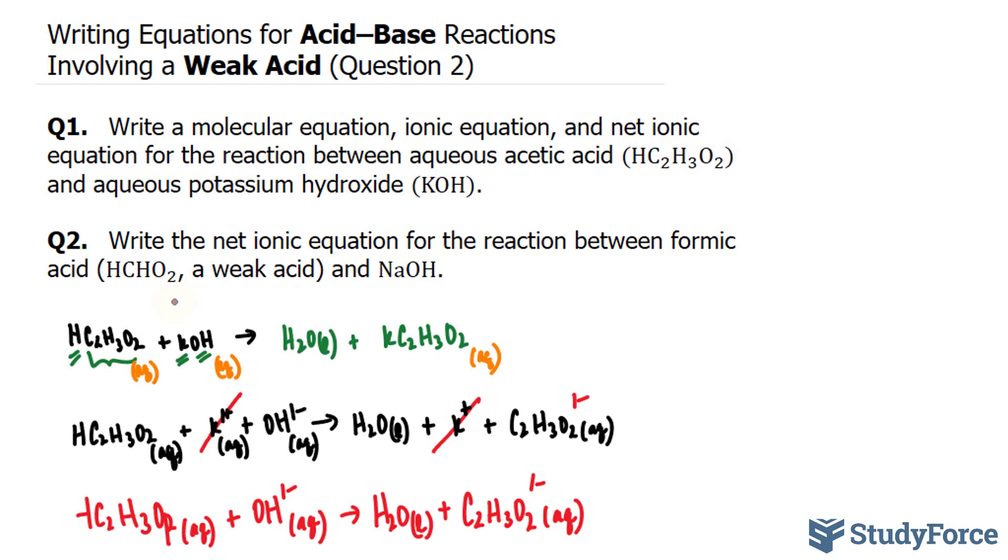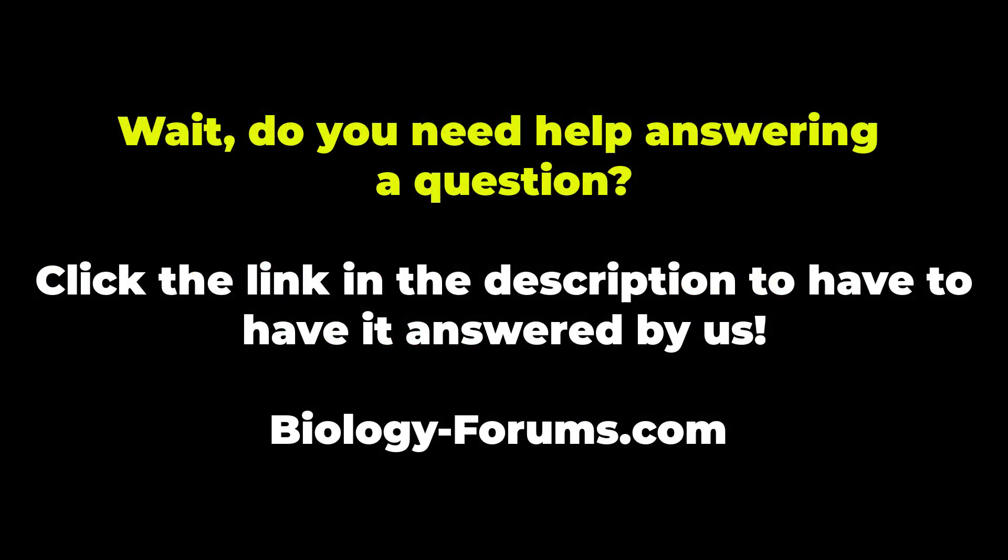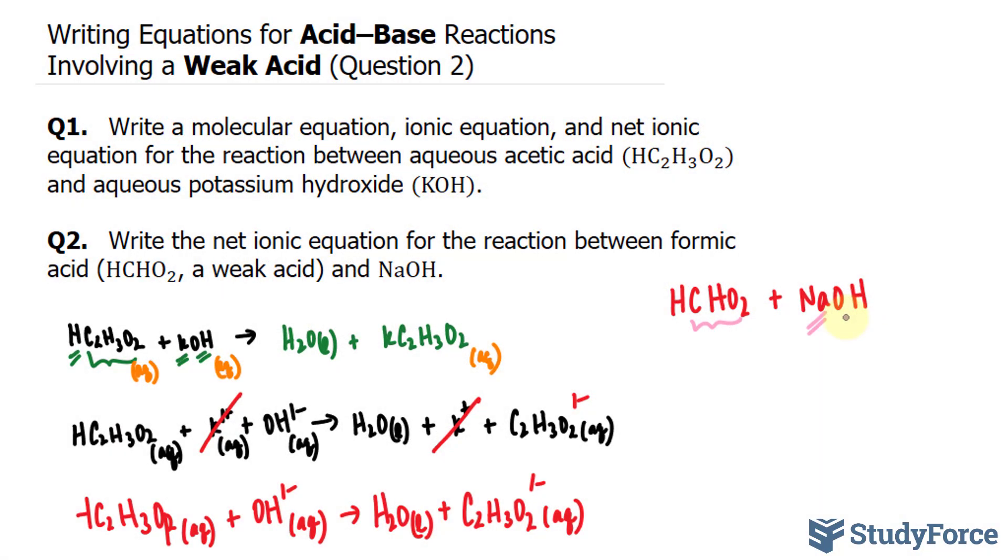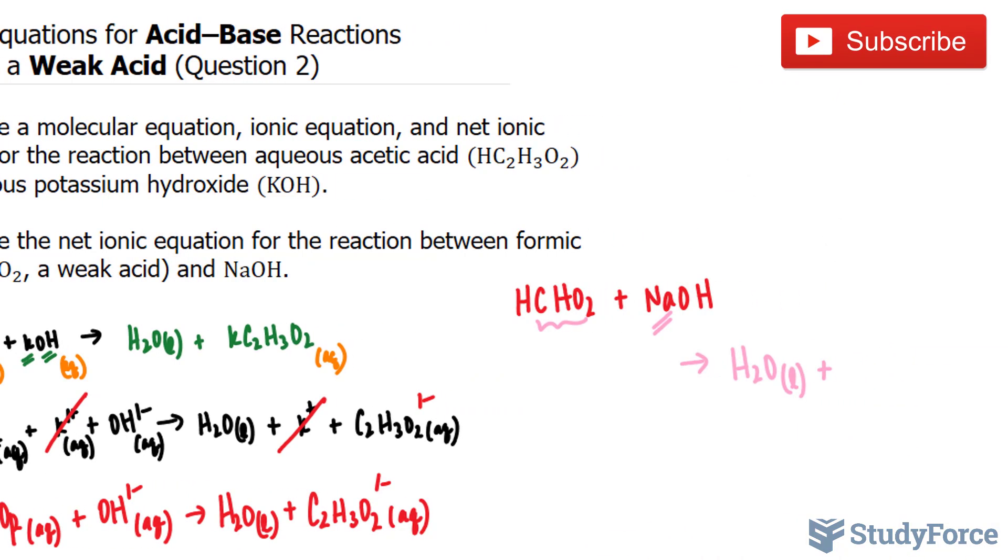So let's start with the molecular equation. We have HCHO2 plus NaOH. Given that this is our weak acid, it will only partially dissociate. So this cation, the Na, will form a chemical bond with the anion of formic acid, namely CHO2. This H and this OH will come together to form water. So this yields H2O, and that's in its liquid state, plus sodium CHO2, NaCHO2.